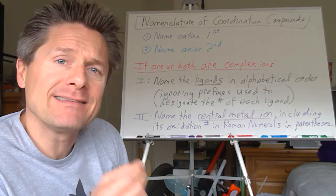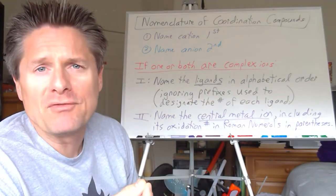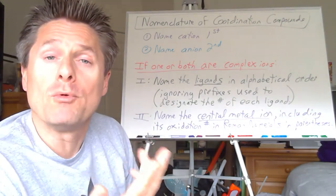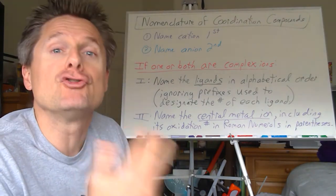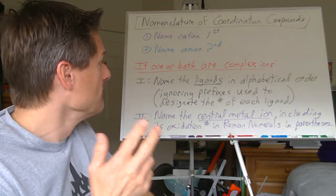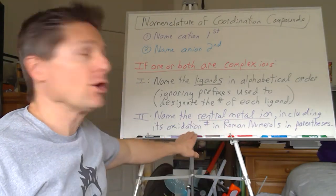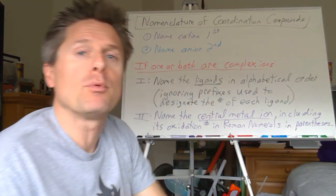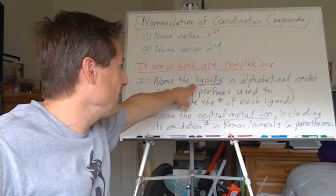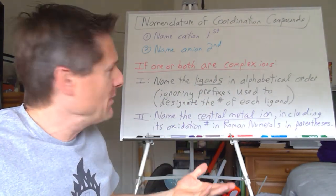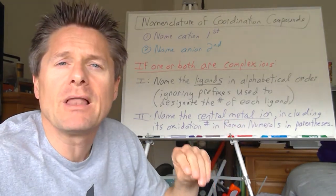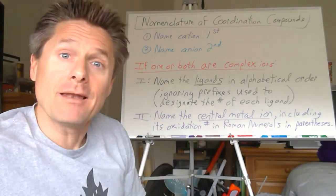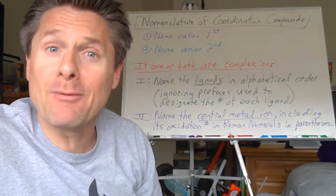When we name the central metal ion, there are some complexities. It's going to be similar to how we did type 2 metals in ionic compounds — like iron(III) — where you designate the charge using Roman numerals in parentheses. We're going to name the central metal ion second, include its oxidation number, and do that in Roman numerals in parentheses, even if it's zero. We name the central metal ion differently if it's part of a complex cation versus a complex anion.